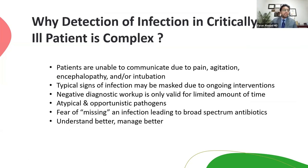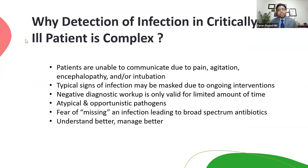Why are infections tough to detect in critically ill patients? These patients are unable to communicate most of the time — they are intubated, on the ventilator, in pain, agitated, and unable to give a good history. There are so many signs of infection which are always masked and blended with other things, so detection based on signs and symptoms alone becomes very complicated.